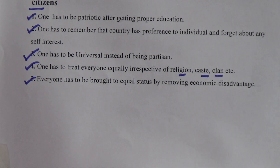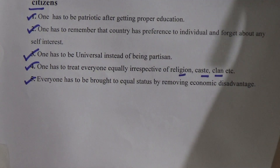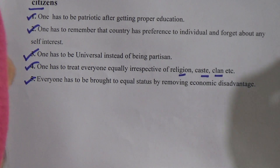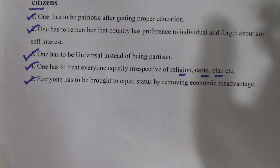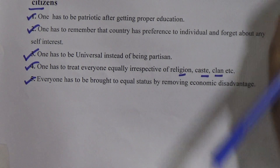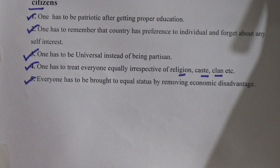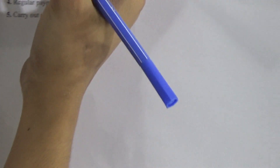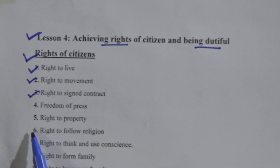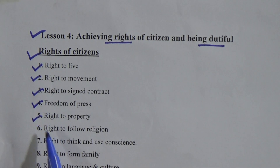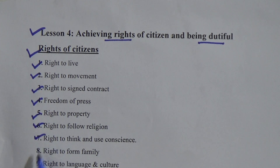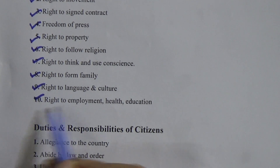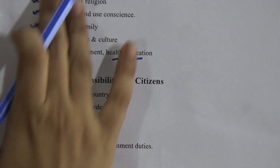Lesson 4 — achieving rights of citizens and being dutiful. The rights of citizens include: right to leave, right to movement, right to sign contract, freedom of press, right to property, right to follow religion, right to think and use conscience, right to form family, right to language and culture, right to employment, health, and education. All of these are the rights of citizens.